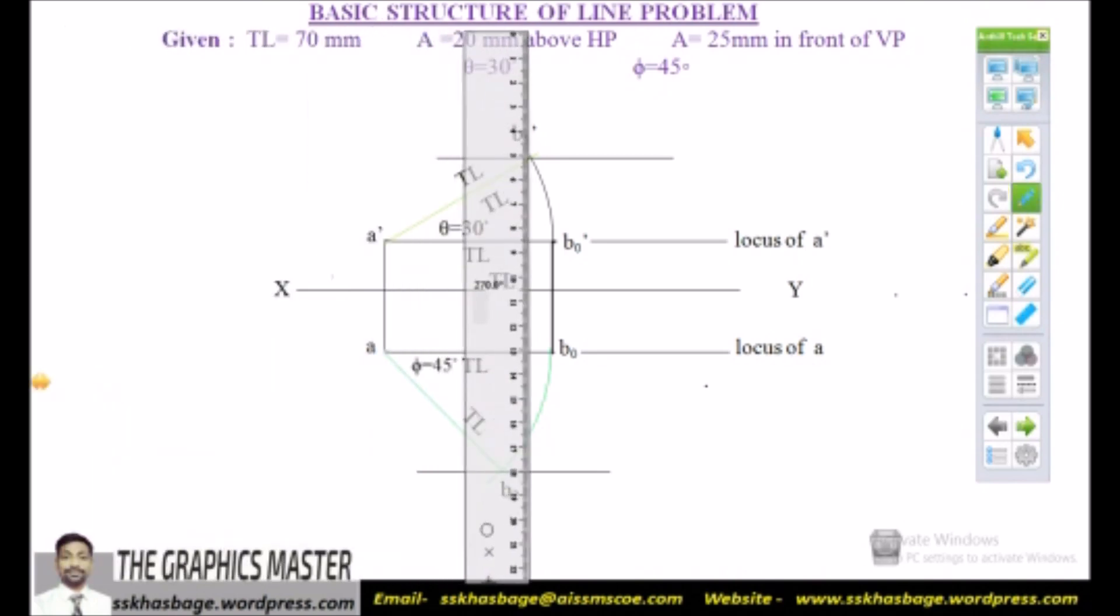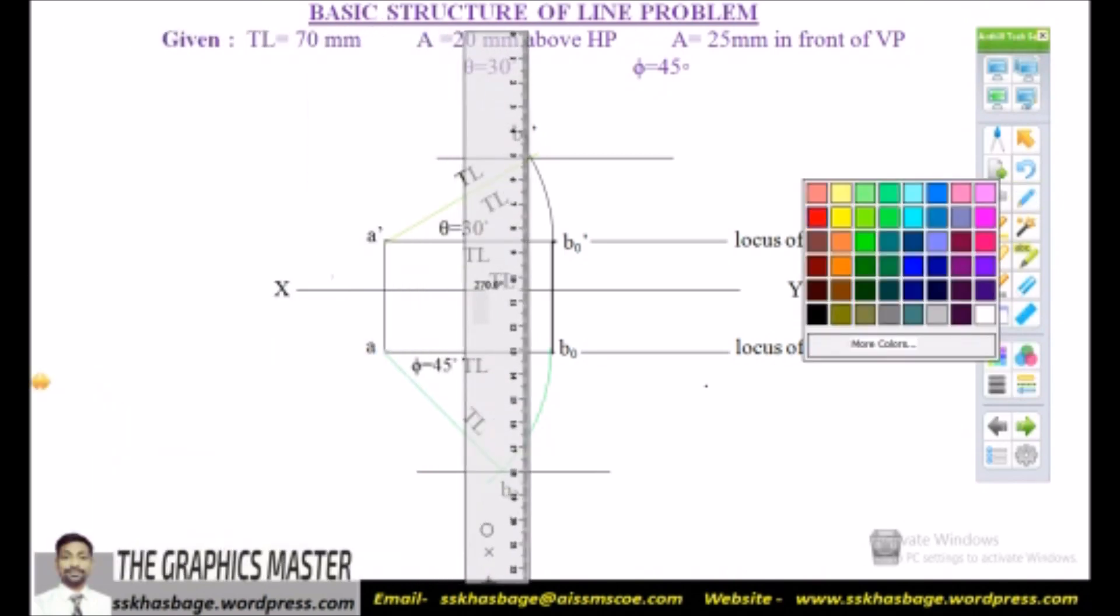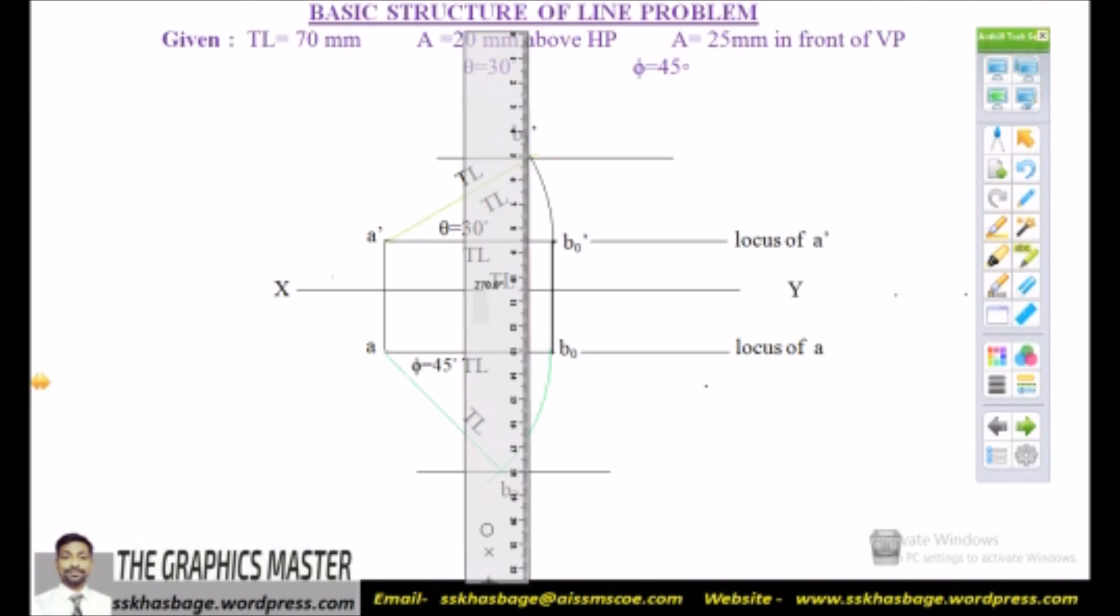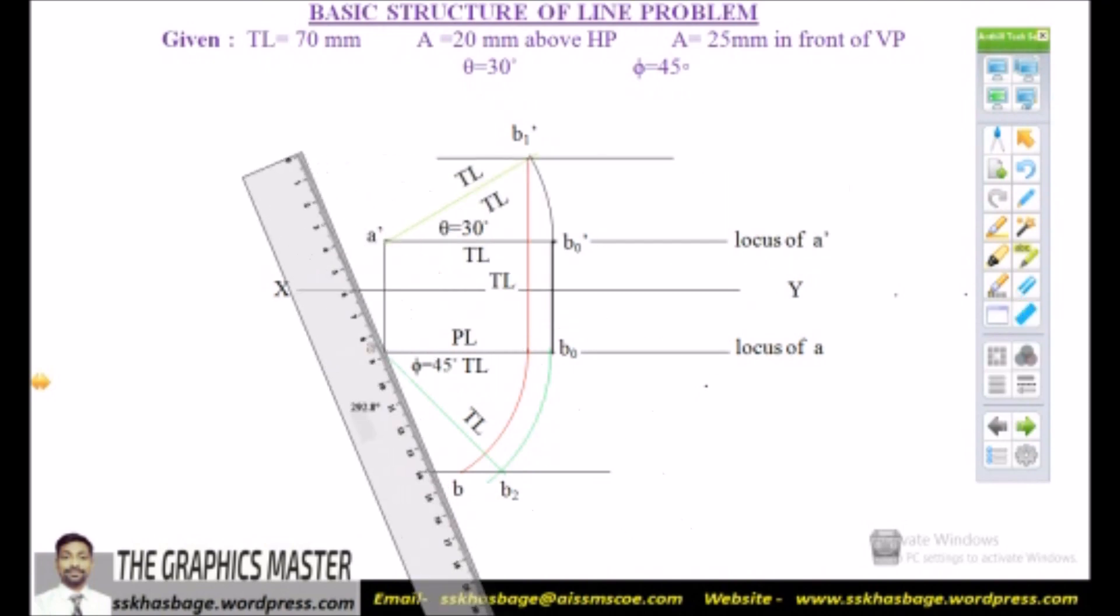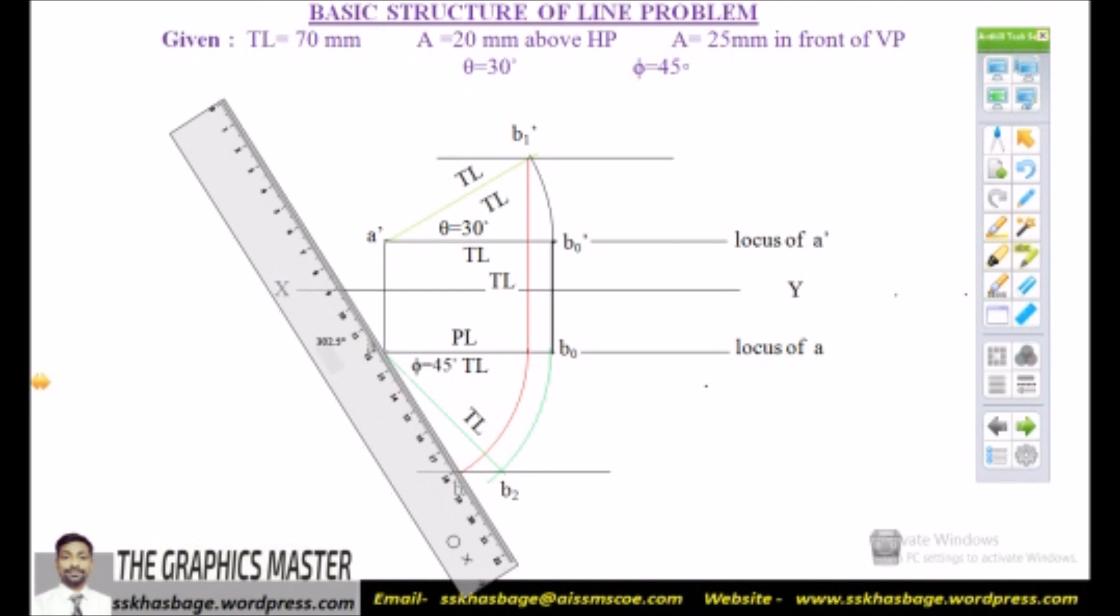Now take a perpendicular projector from the true length in front view to the locus of A in top view. So this distance is called as PL. Now locate this PL to its original position that is onto the locus of B in top view. So we get actual top view of the line AB here.